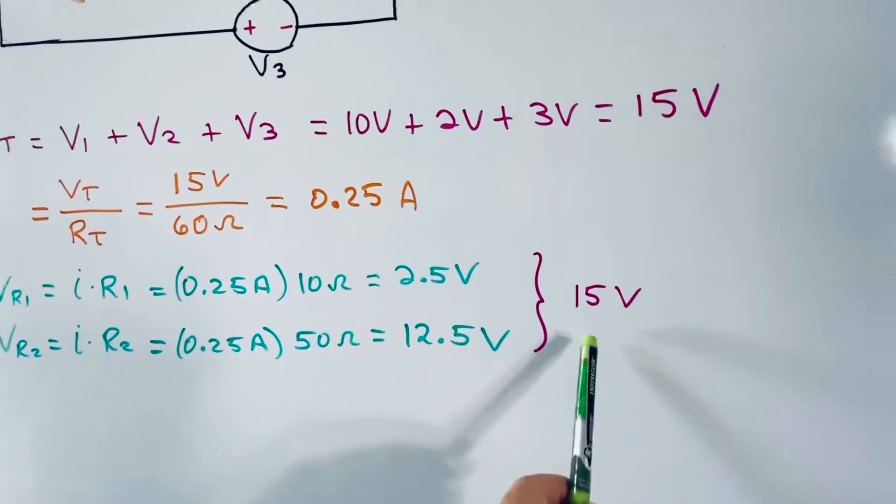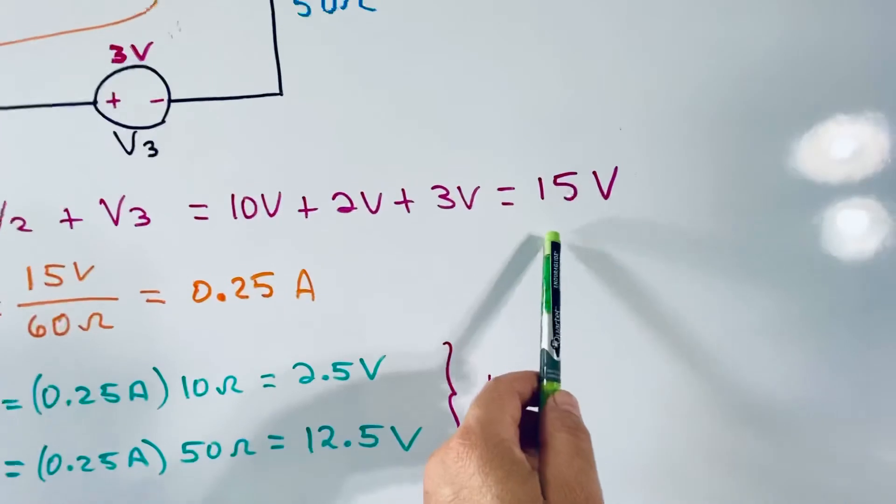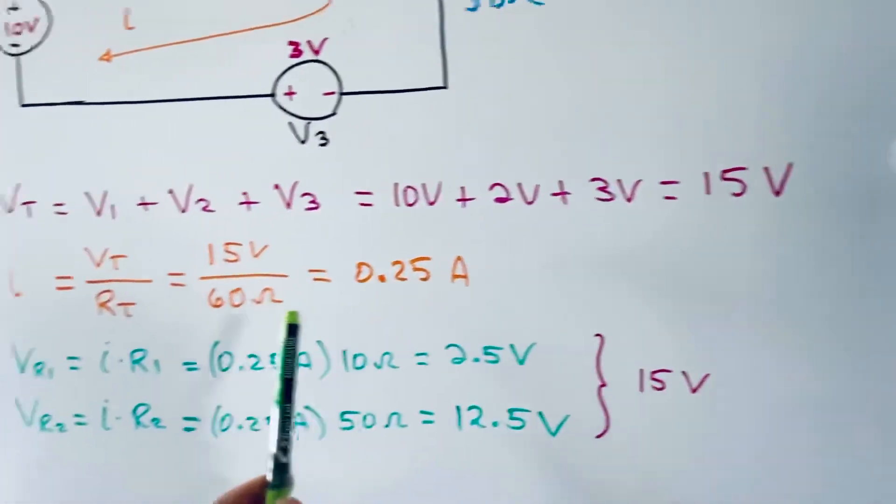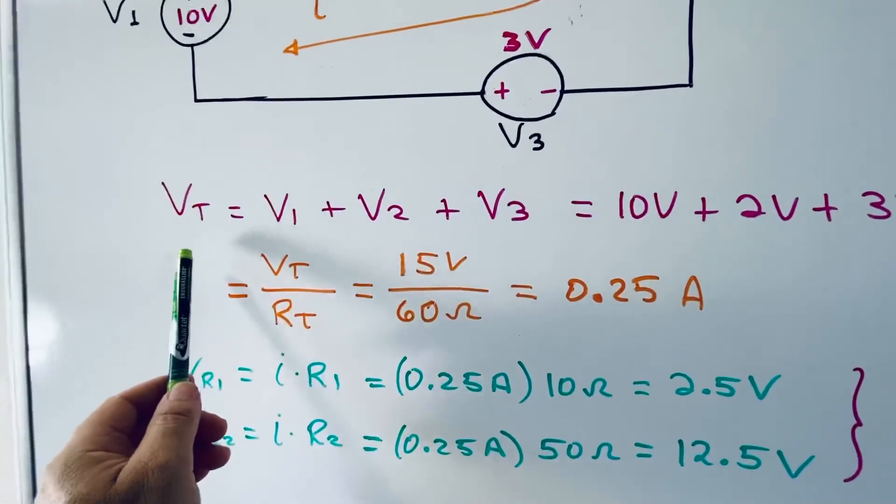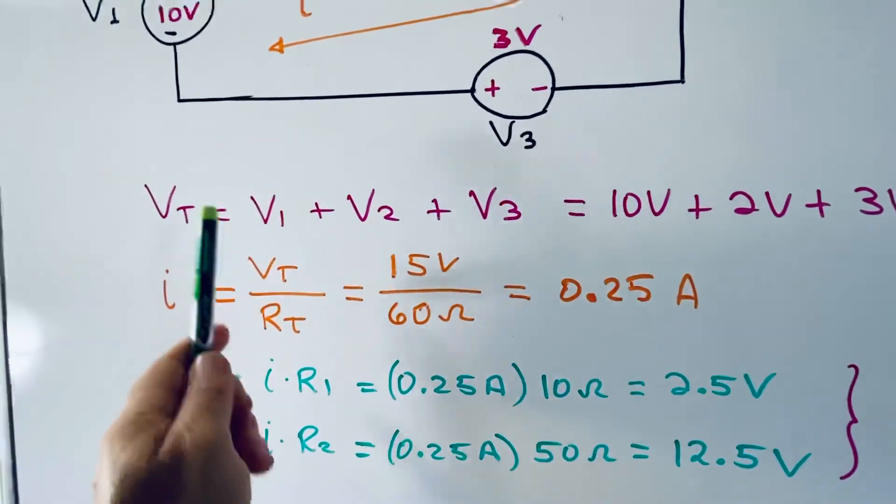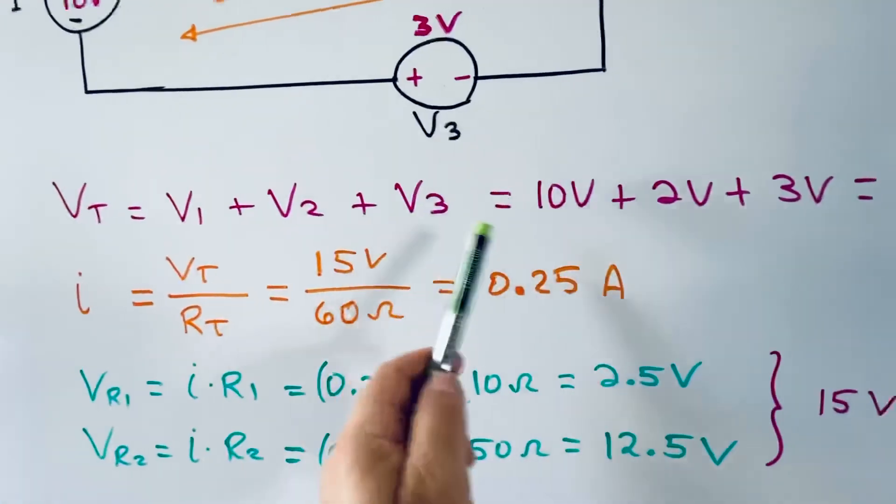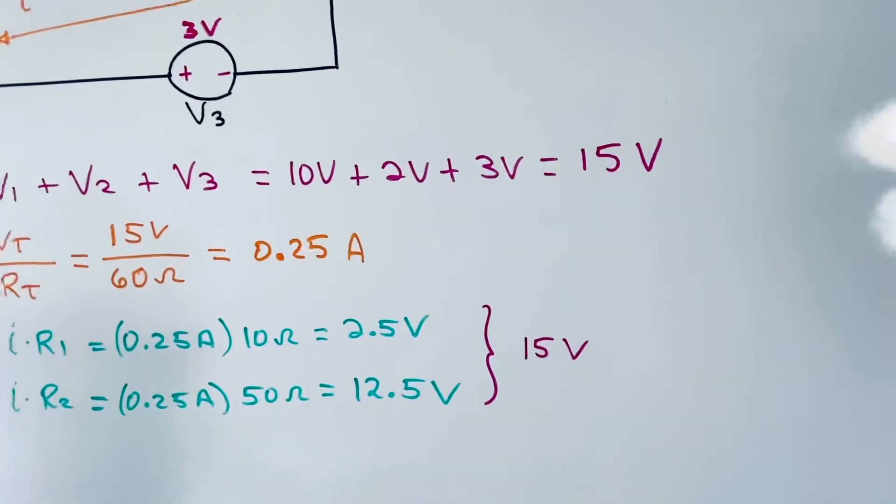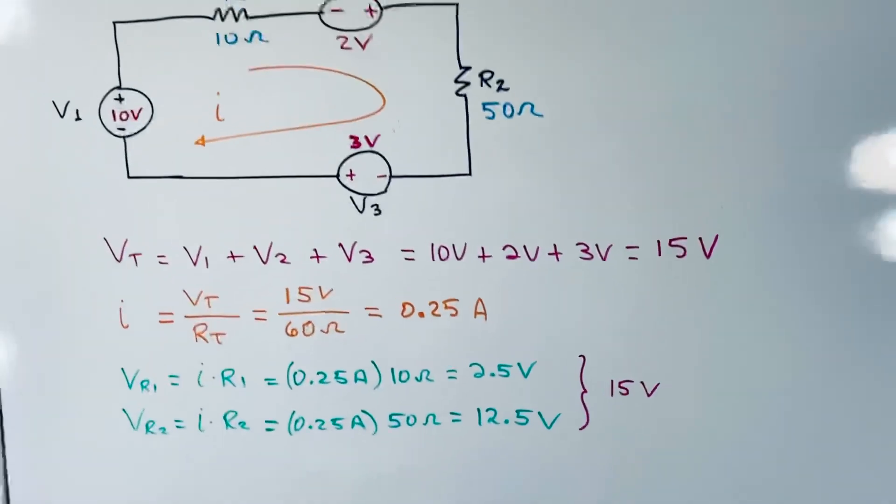The sum of these two voltages must be equal to the total voltage we determined with the algebraic subtraction, in this case with the algebraic addition of the power supplies. Okay, thank you.